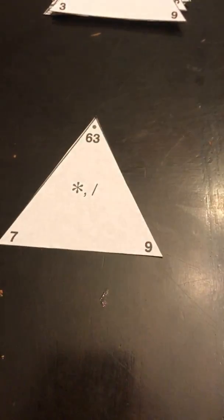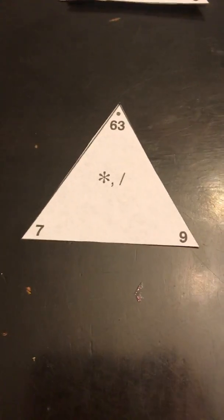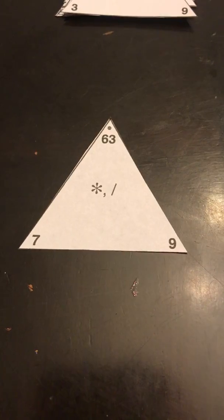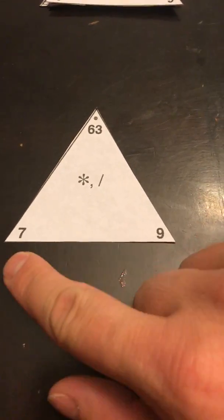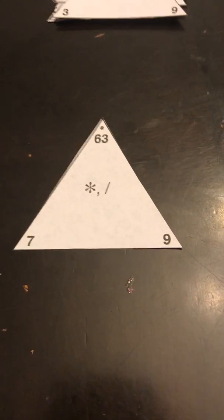Here we've got 7, 9, 63. So 7 times 9 is 63, 9 times 7 is 63, 63 divided by 9 is 7, and 63 divided by 7 is 9. These all work together to make what we call a fact family.